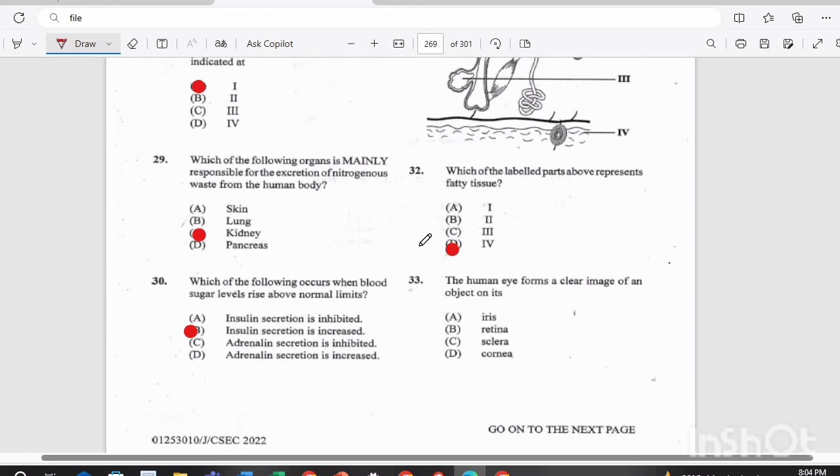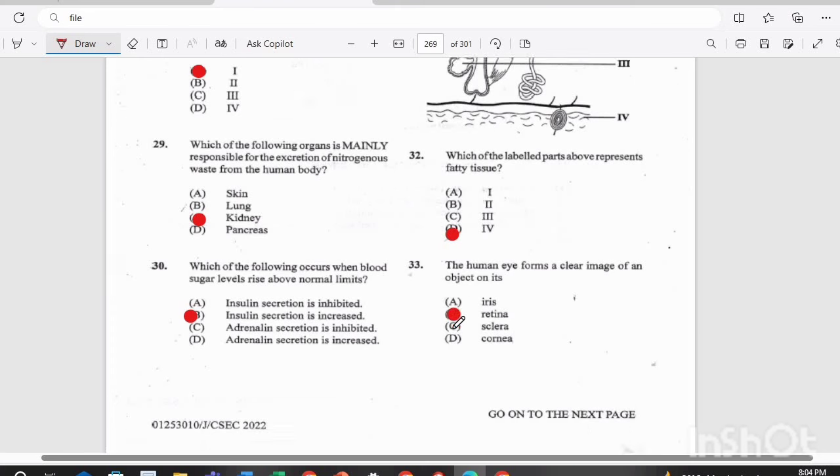Question 33. The human eye forms a clear image of an object on its A, iris, B, retina, C, sclera, or D, cornea. The answer there would be B, the retina.